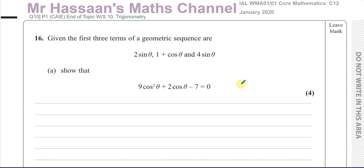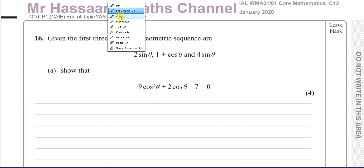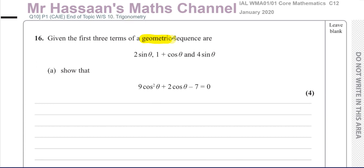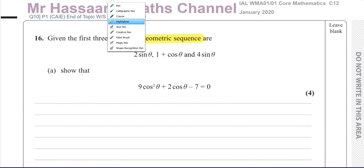This question is a mixture between trigonometry and sequences and series. We're told that the first three terms of a geometric sequence are 2 sin θ, 1 + cos θ, and 4 sin θ, and we have to show that 9 cos²θ + 2 cos θ − 7 = 0.